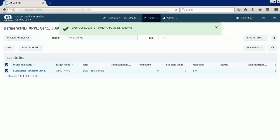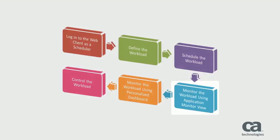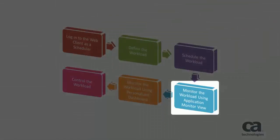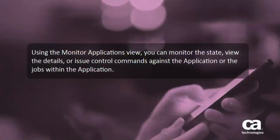As the application is going to run immediately, it should now be available in the monitor view. So let us now monitor the active workload by navigating to the monitor applications view. Using the monitor applications view, you can monitor the state, view the details, or issue control commands against the application or the jobs within the application.